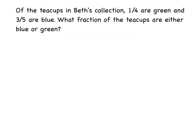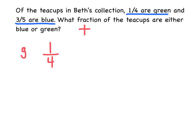So now we're going to get to some fraction word problems. The first one says, of the teacups in Bess's collection, one-fourth of the teacups are green and three-fourths are blue. I usually like to highlight or underline key information. The question says, what fraction of the teacups are either blue or green? Either blue or green means those two together, so the operation I'm going to do is add. So I'm going to add one-fourth, that's the green, and then add the blue to it.